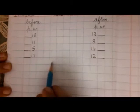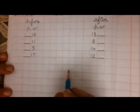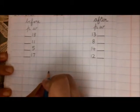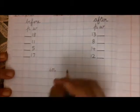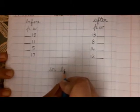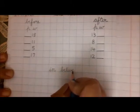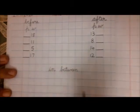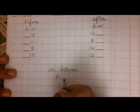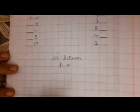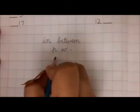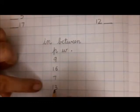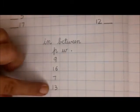Now I will leave this line blank and here I will write 'in between'. Children, you can take help from mama or papa. I-N B-E-T-W-E-E-N — in between. Now here I will write PW.